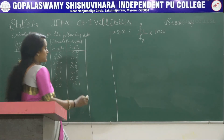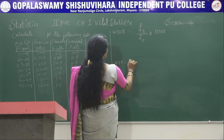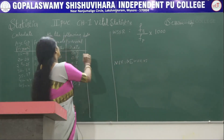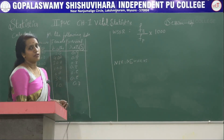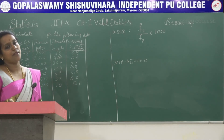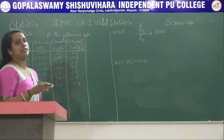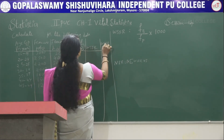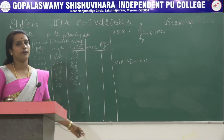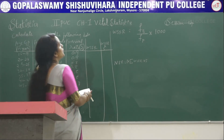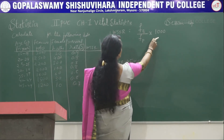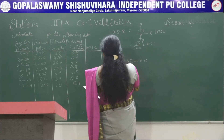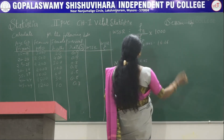Survival rates are very important for calculating NRR. The formula is: NRR = I × summation of (WSFR × S), where S is the survival rate. We must first find WSFR, then multiply the WSFR values by the survival rates to get WSFR × S. The WSFR formula is female births divided by female population into 1000. For example, 50 ÷ 3000 × 1000 = 16.66.